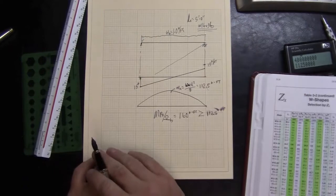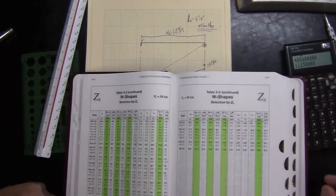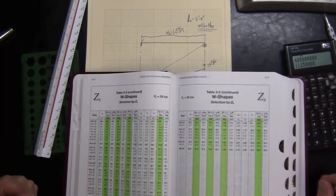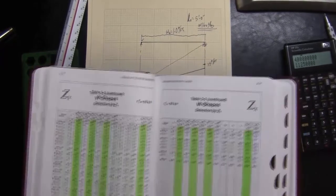This is not a detailed calculation of the member at all. We have not gone through how connections will connect to it. We haven't looked at deflections or constructability considerations.